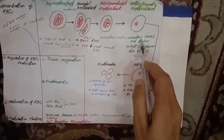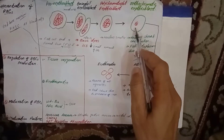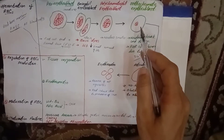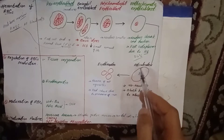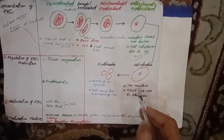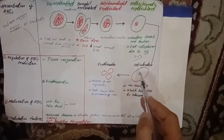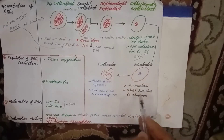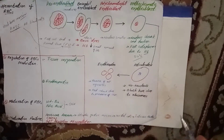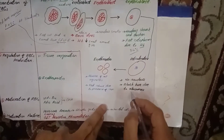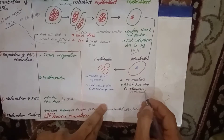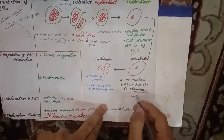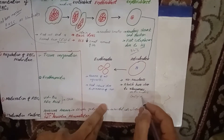When the shrunken nucleus is reabsorbed or extruded, it gives rise to the reticulocyte. In the reticulocyte, no nucleus is present, and the cell has a bluish hue due to the presence of ribosomes, mitochondria, and Golgi apparatus.